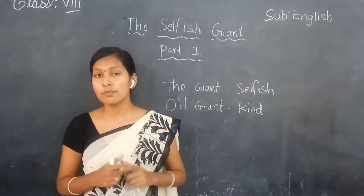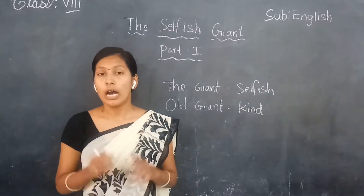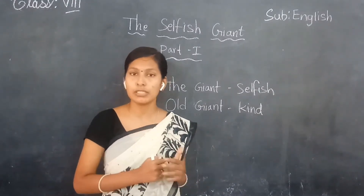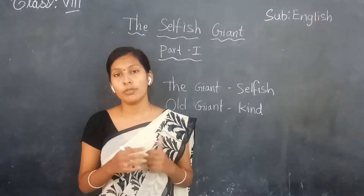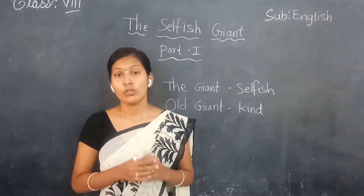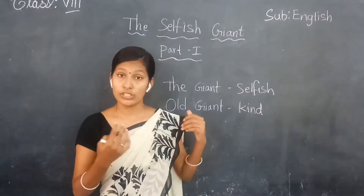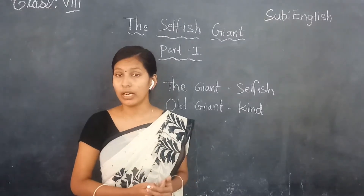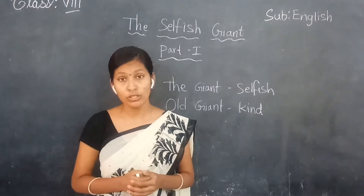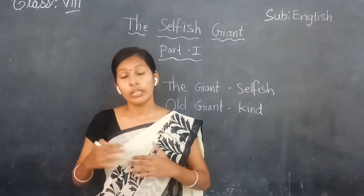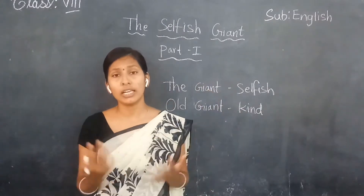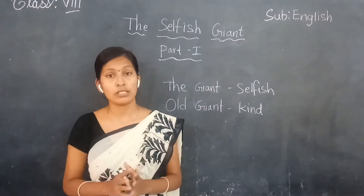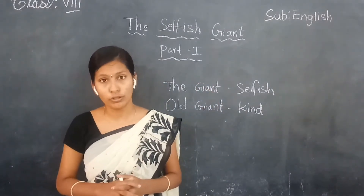Trespassers means a person who comes into another person's land without permission. Jane thought these children were coming into his garden without permission, so he kept a high wall around the garden and also put up a board that said trespassers will be prosecuted.